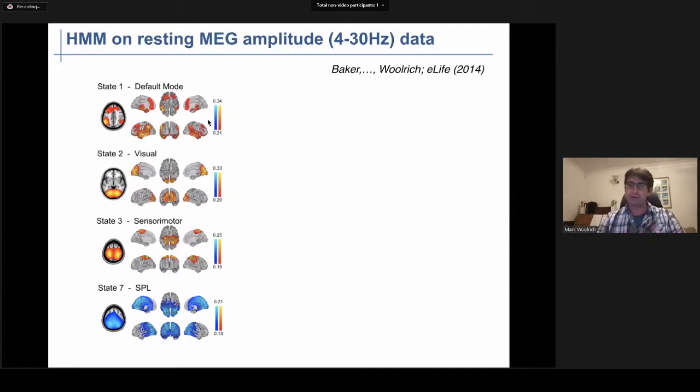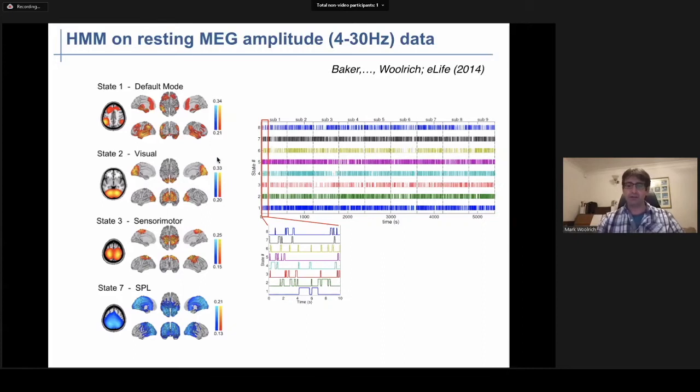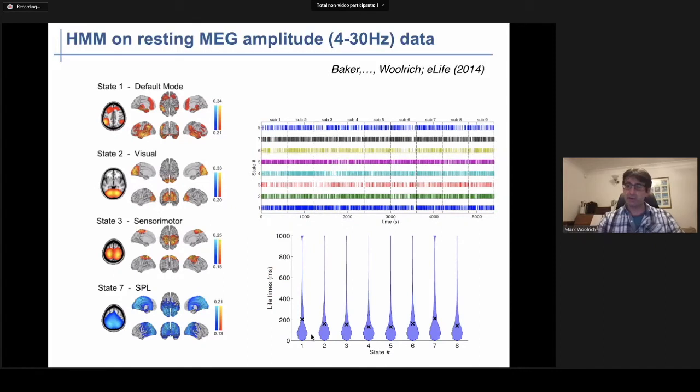But again, if we look at the dynamics of these networks, we can see very fast switching on these sub-second timescales. If we look at the eight states that were inferred here, we can see that in the first 10 seconds, for example, every single state is visited multiple times. Indeed, if we look at the lifetimes of these states, we can see lifetimes on the order of 50 to 100 milliseconds. So we're seeing these resting state networks switching on timescales orders of magnitude faster than have been shown previously using other approaches.